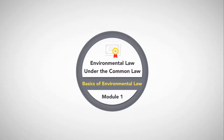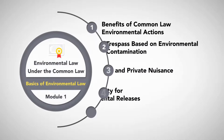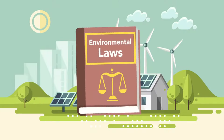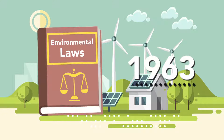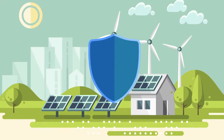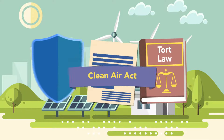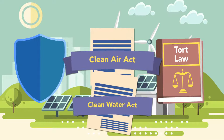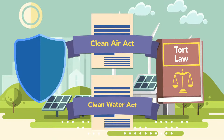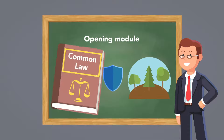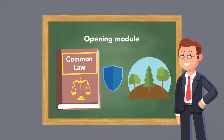Module 1: Environmental Law Under the Common Law. While major environmental laws are a relatively recent phenomenon in American history, dating back to only 1963, there were ways in which the environment could be protected and environmental damage remedied under tort law and other principles of law predating the passage of the Clean Air Act, Clean Water Act, and other major environmental legislation. In our opening module, we will discuss how common law protects the environment in ways that don't depend on these landmark laws.